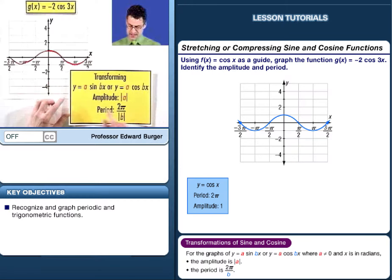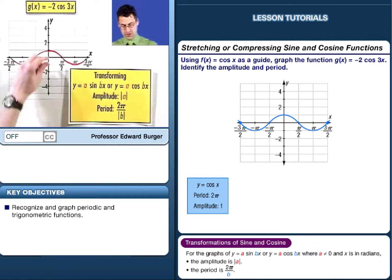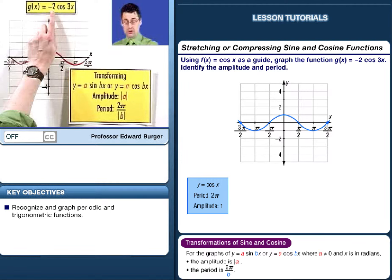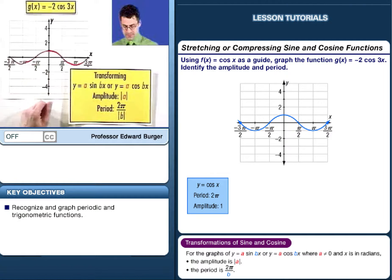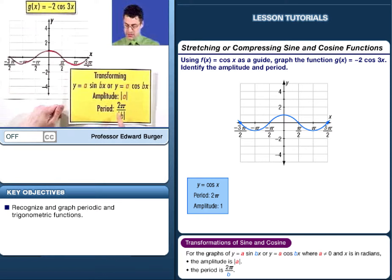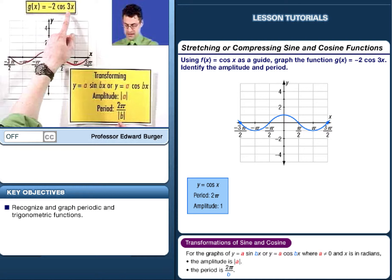So in either case, if we have y equals a sine bx, or y equals a cosine bx, it turns out that the amplitude, which is the height of the highest points here, will be the absolute value of a, which in this case will be the absolute value of negative 2, which equals 2. So that means we're going to have a stretched thing here, and these will stretch down. And the period will always be 2 pi divided by the absolute value of b, where b is the coefficient in front of the x.